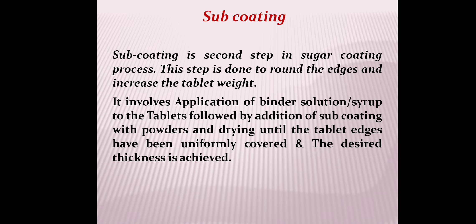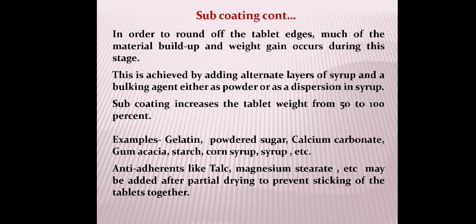Sub coating is the second step of the sugar coating process. It is done to round the edges and increase the tablet weight. It involves application of binder solution syrup to the tablet, followed by addition of sub coating powders and drying until the tablet edges are uniformly covered and desired thickness is achieved. Much of the material buildup and weight gain occurs during this stage, with tablet weight increasing from 50 to 100%. Examples of sub coating materials include gelatin, powdered sugar, calcium carbonate, gum acacia, starch, corn syrup, and others. Anti-adherents like talc, magnesium stearate, and colloidal silica may be added after partial drying to prevent sticking.